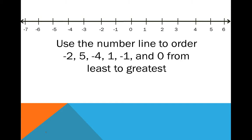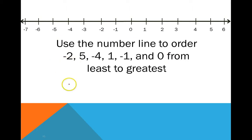Now let's use the number line to order negative 2, 5, negative 4, 1, negative 1, and 0 from least to greatest. On the number line, we have 0 in the middle, then we go 1, 2, 3, 4, 5, 6 to the right, and if we go the other way we go negative 1, negative 2, negative 3, negative 4, negative 5, negative 6. First, let's find each of these numbers on the number line, and then we'll see how we order them from least to greatest.